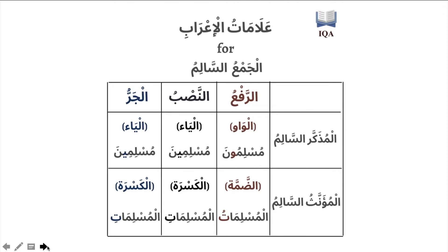For the Jama' Mudhakkar Salim: for Raf'a, the sign is a Waw (Muslimuna); for Nasb, a Ya (Muslimina); for Jarr, also a Ya (Muslimina). The context distinguishes Nasb from Jarr.